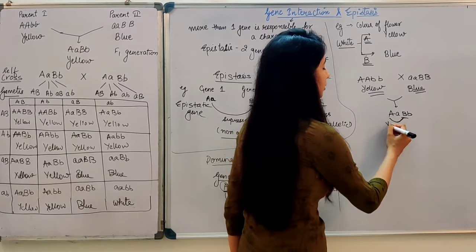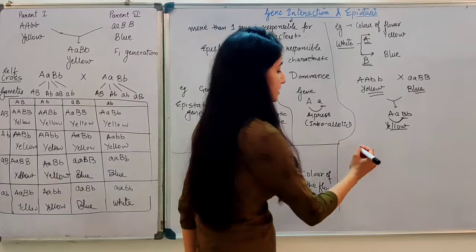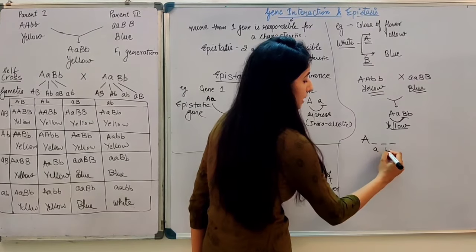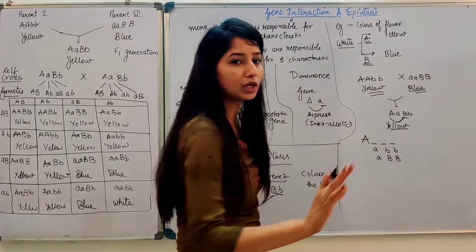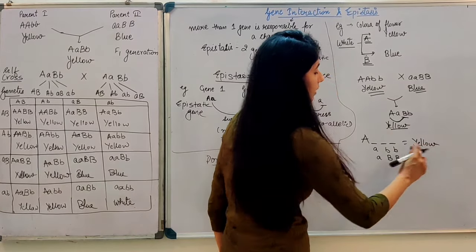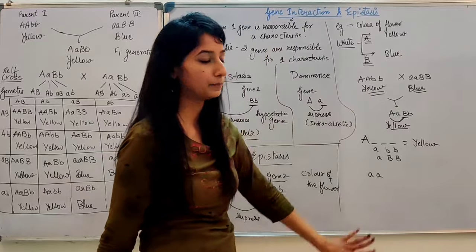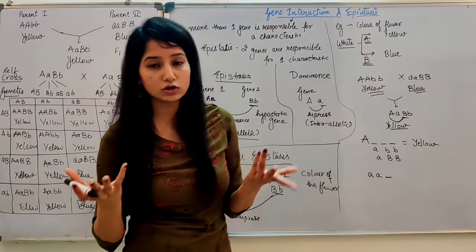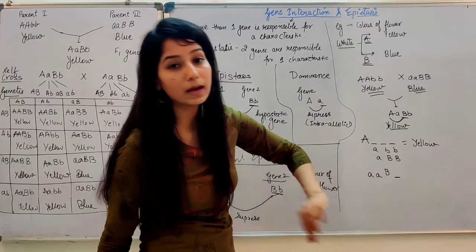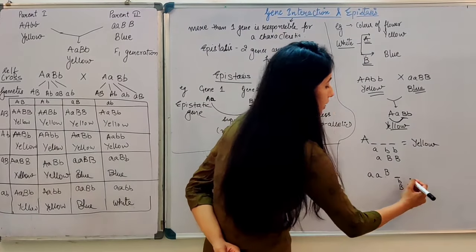If we see different combinations — if capital A is present in the offspring, no matter what else is present (whether ABb or Abb), it will always be yellow color. If two small a are present, then small a cannot suppress gene B. So if capital B is present, capital B will express itself even if small b is also present. So the offspring will be blue.